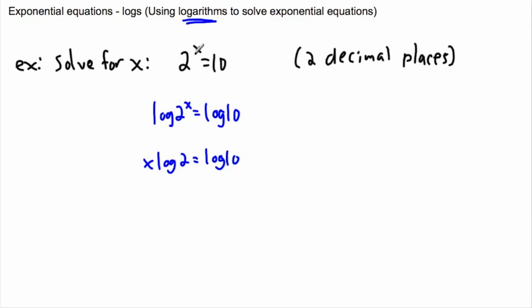Because it's really complicated otherwise to sort of get rid of a power. This is how you can do it. You can take the log and then use this rule. Well, then you can say that x is just log 10 divided by log of 2.